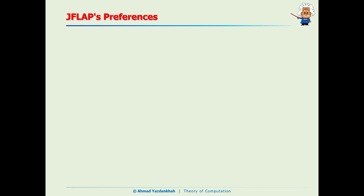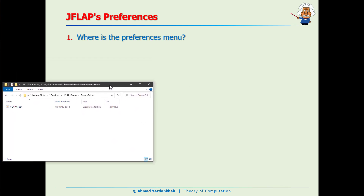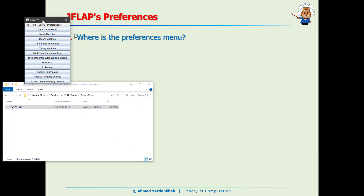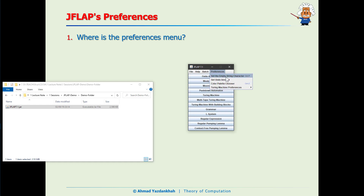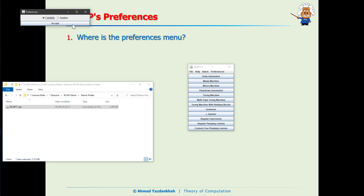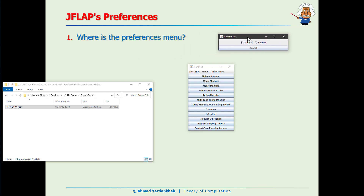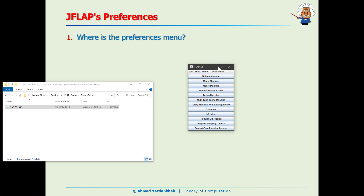Let's start with the preferences. First we need to run JFLAB. Here are the preferences — as you see we have some sub-items. Under 'set the empty set,' if you remember, there are two different symbols for empty strings: lambda and epsilon. You can set it here, and we would like to continue with lambda.